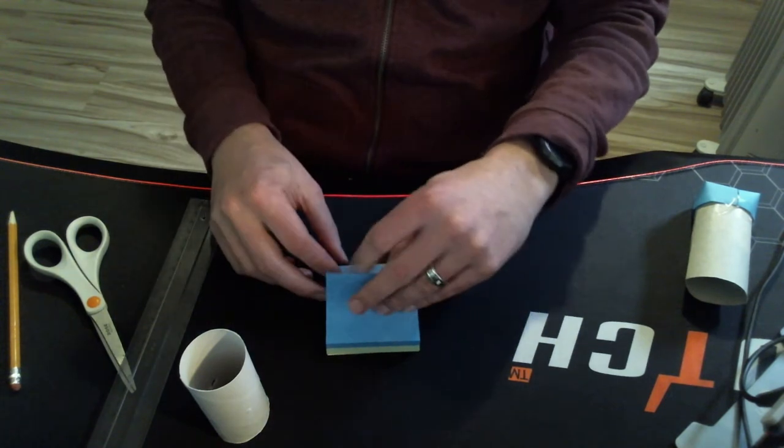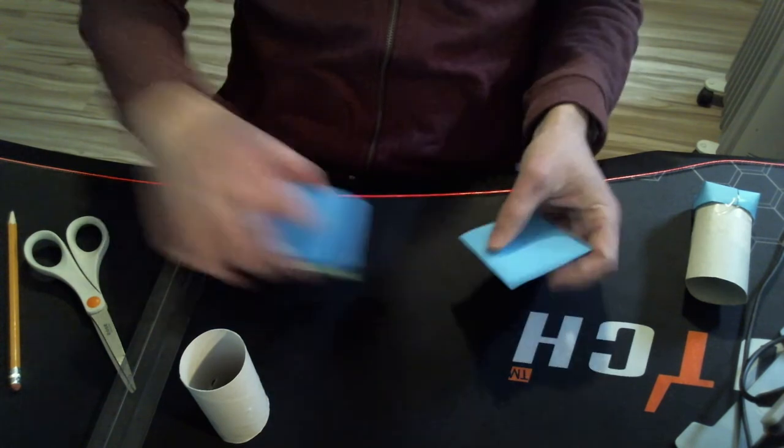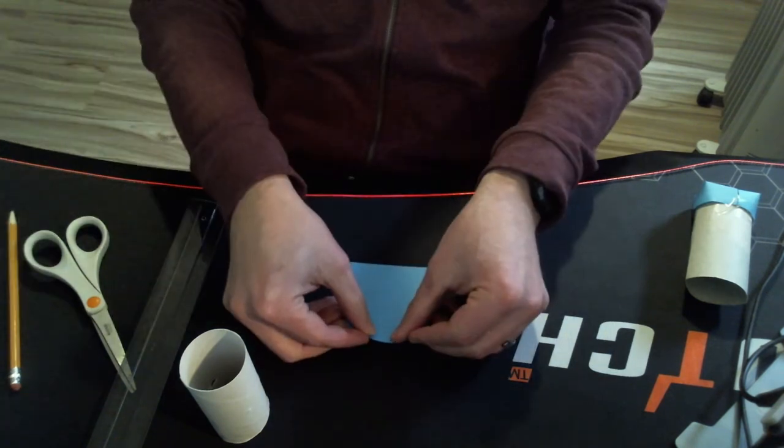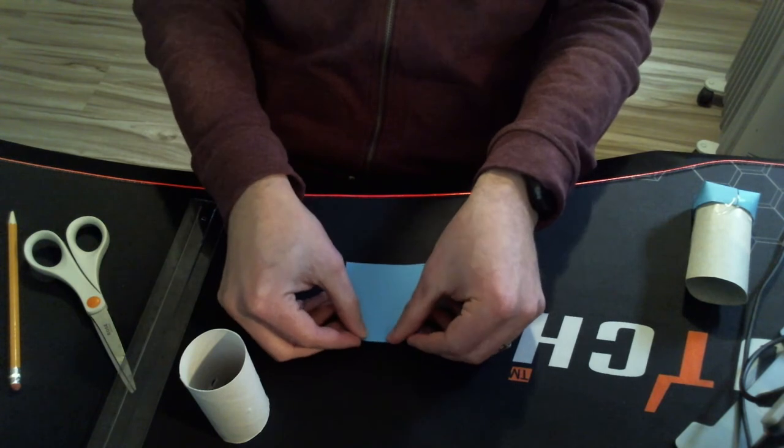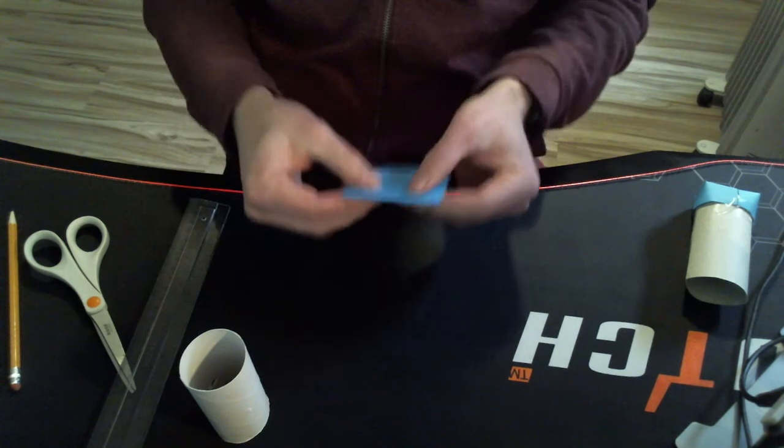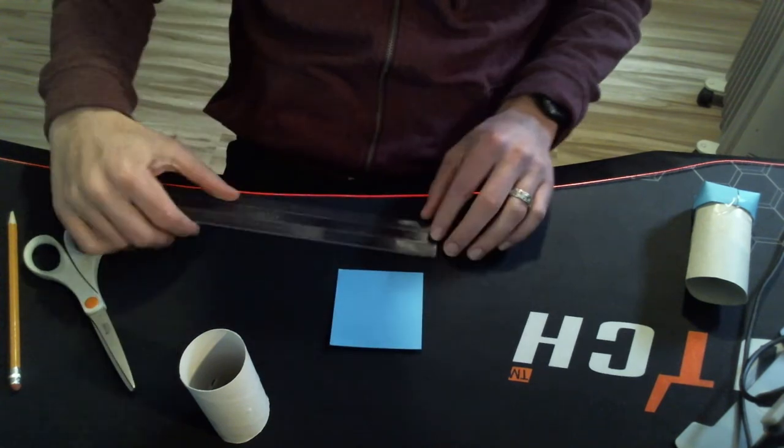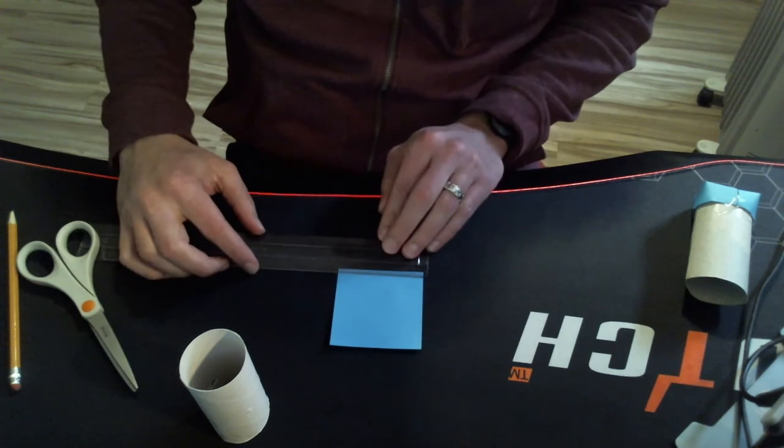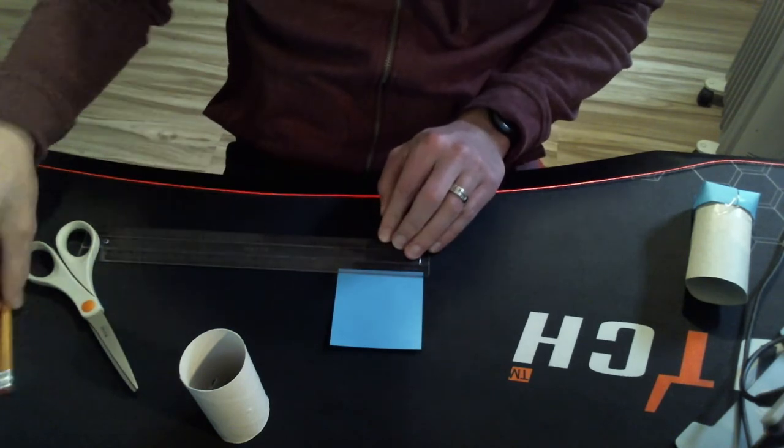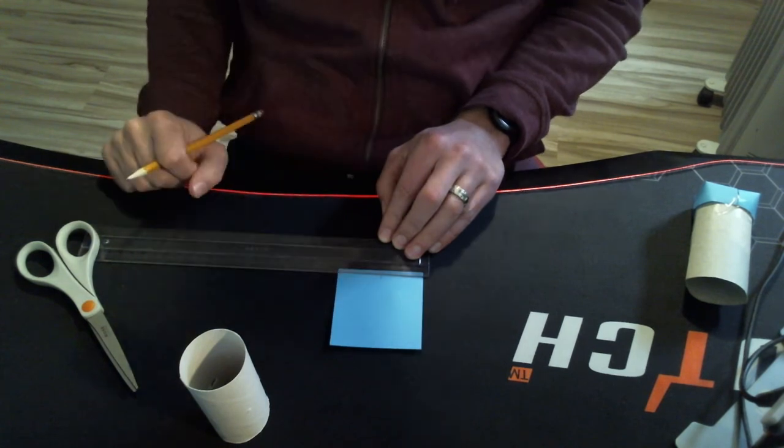I'm actually going to use three post-it notes here to get a nice thick layer, and that's what I'm going to work with. So what I'm going to do to start off, I'm actually going to do this at the end that's all stuck together. I think that will work better if we use the sticky end that we cut into. I'm going to first of all find the center of my post-it notes, and I'm going to mark that with a pencil.